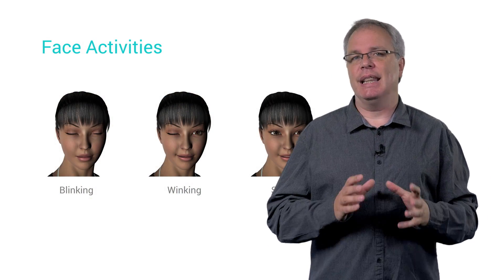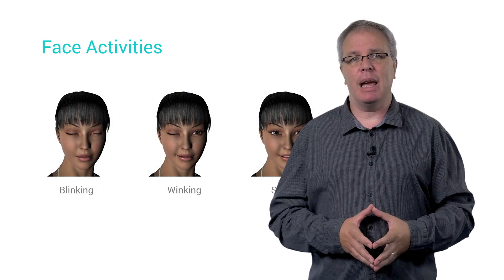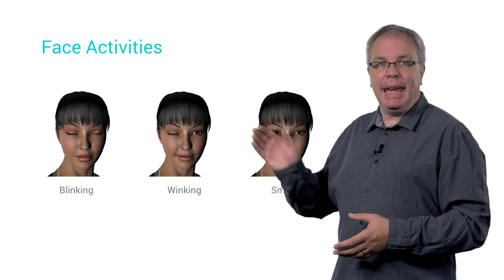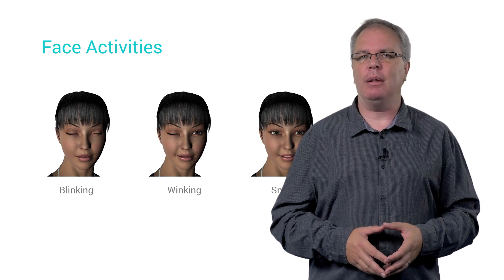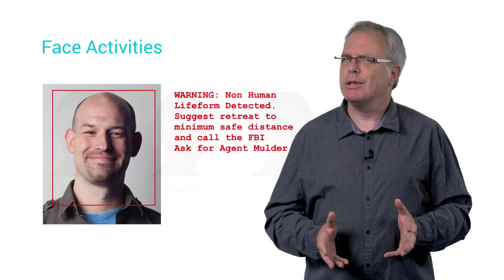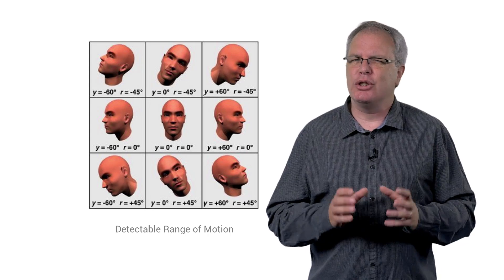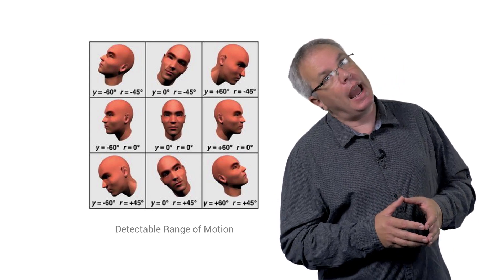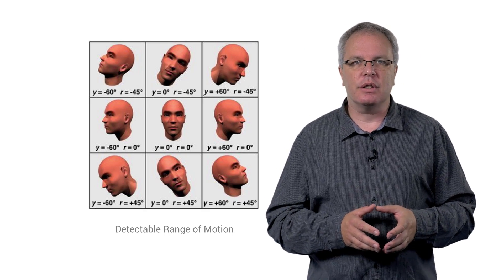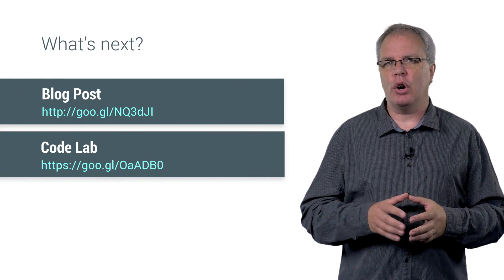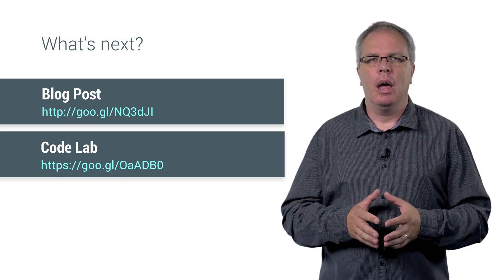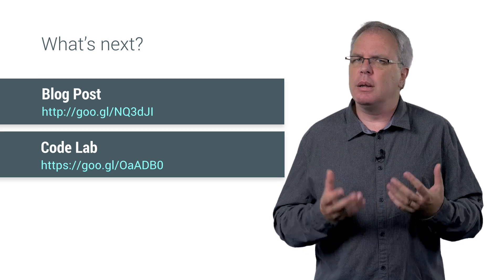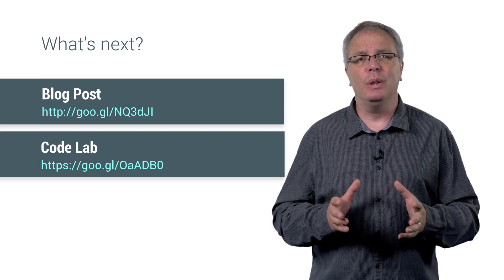Beyond just seeing the landmarks on the face, the Vision APIs can also detect activity on the face — so maybe a subject is blinking, or maybe they're winking, or maybe they're smiling. There's an API for that. The face doesn't have to be directly facing the camera; the API is smart enough to detect the face even at different angles and inclinations. Think about the things you could do by turning your face into a controller — maybe wink your left and right eyes to move a spaceship left or right, and smile to shoot. The possibilities are limited only by your imagination.